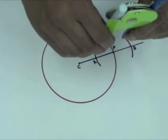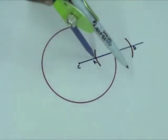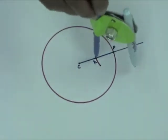Open the compass wider. Place the compass point on A and draw arcs above and below the half line.